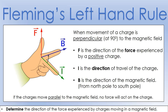First, a quick review of Fleming's left-hand rule. This applies specifically when a charge is moving perpendicular to a magnetic field and in no other scenario. Our thumb tells us the direction of force experienced by a positive charge, the index finger gives the direction of travel of the charge, and B is the direction of the magnetic field. If the charge is moving parallel to the magnetic field, we're not going to get any force at all.